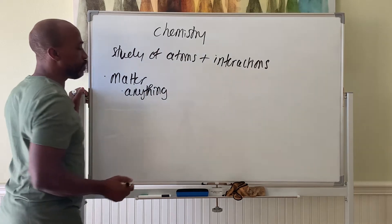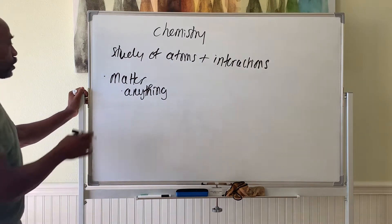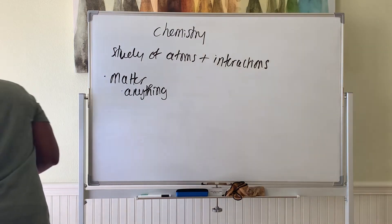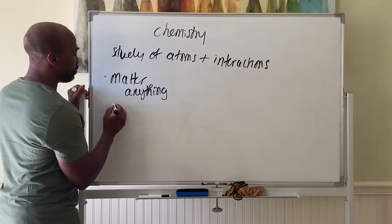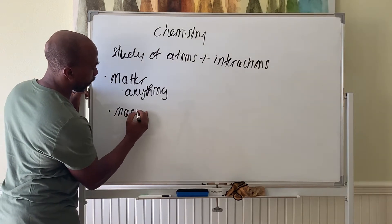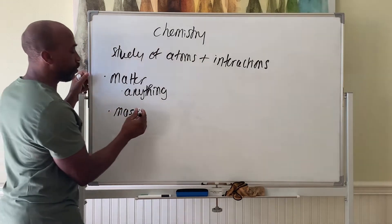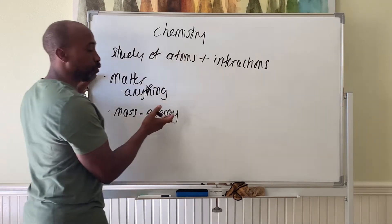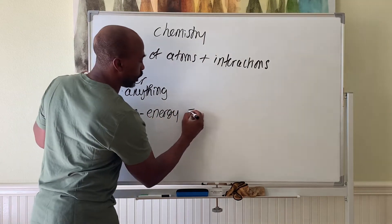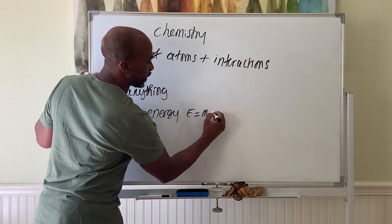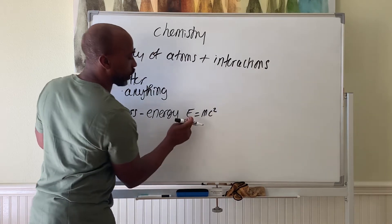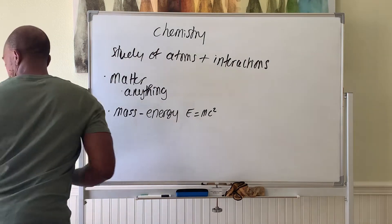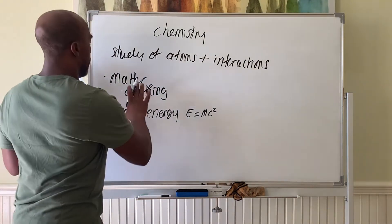There's also something called antimatter but we won't talk about that at this point. Anything that we are aware of in the universe, in our lives, is matter. Matter has mass, and the mass of anything really refers to the amount of energy contained in that object. So mass is really energy based on that famous equation E equals mass times the speed of light squared.